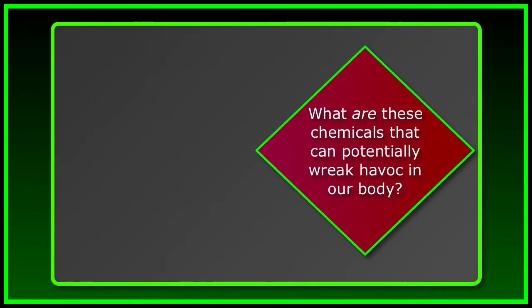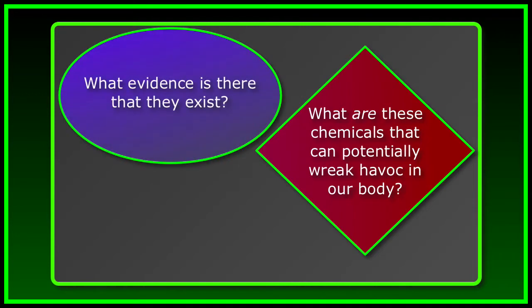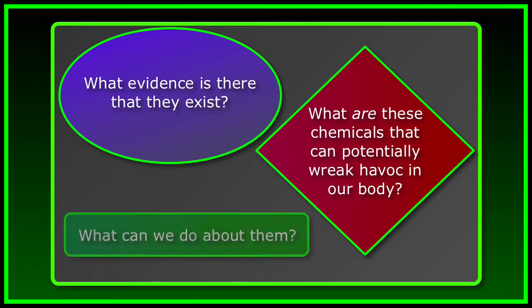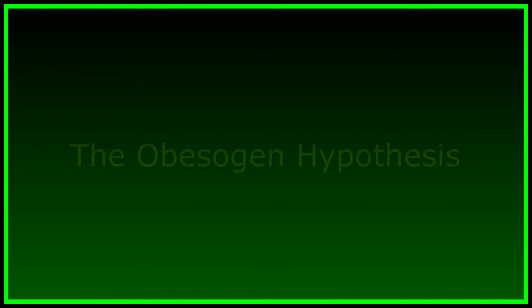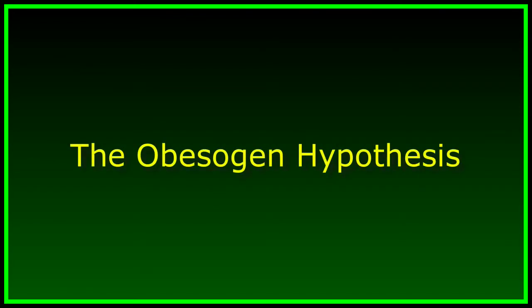So we must end with these questions. What are these chemicals that can potentially wreak havoc in our bodies? What evidence is there that they exist? Are we exposed to enough of them to harm us? And if so, what can we do about them? We'll cover that in the last module when we discuss the obesogen hypothesis.